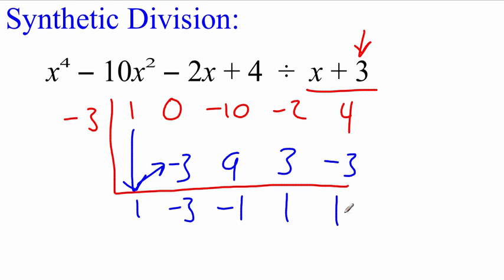If we think back to that factor theorem, since we ended up with a non-zero remainder, that would tell us that this (x + 3) isn't actually a factor of this thing that we started with. But we can still take this and write it out as a polynomial function.